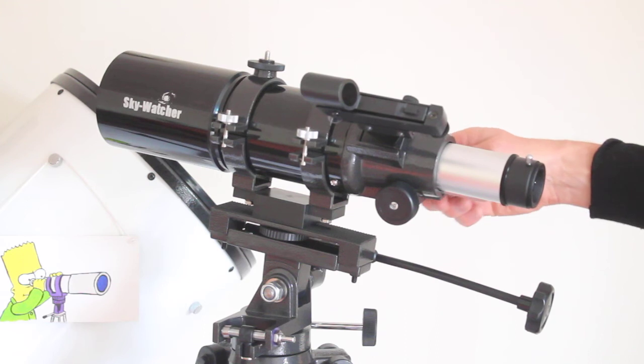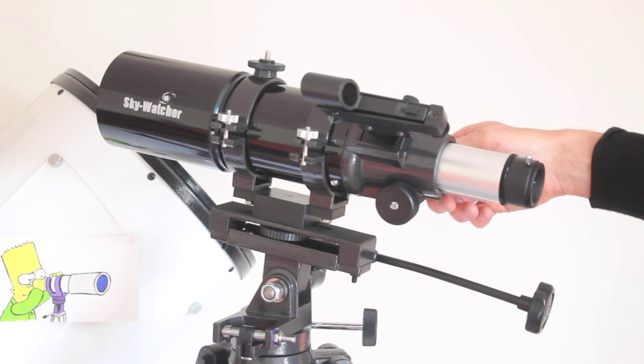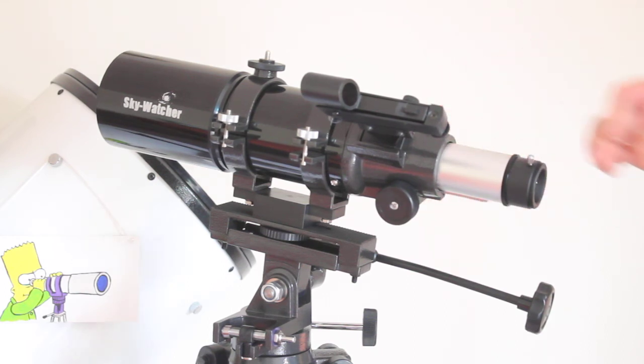With some cameras, you'll find there's not enough outward travel, and so you think you need to buy an extension tube, but you don't really have to.